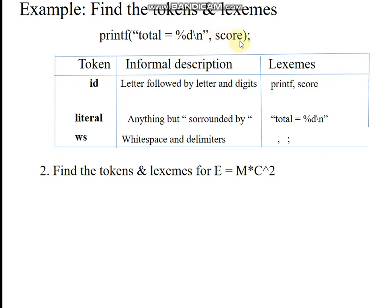Next, 's', 'c', 'o', 'r', 'e' — a letter followed by any number of letters. When it reaches the closed parenthesis, the identifier rule only allows letters and digits, not symbols. So 'score' is assumed as another identifier token, with 'score' as the lexeme. The closed parenthesis is a symbol token, and the semicolon is a delimiter — delimiters like semicolons and commas do not have a lexeme value.